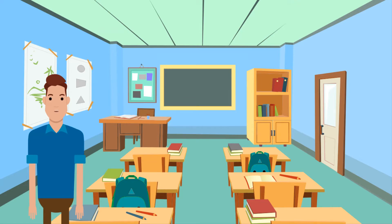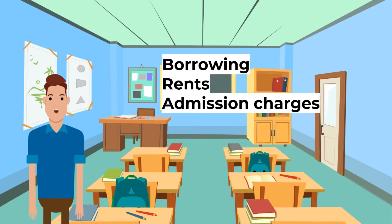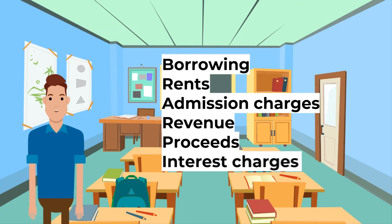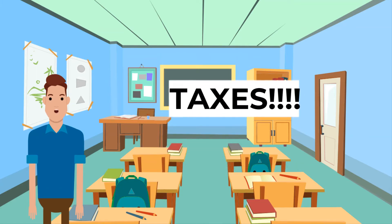Why do we need taxes? First, let's look at how governments finance public expenditure. Governments have many options, including: borrowing from the private sector, rents from publicly owned buildings and land, admission charges from public museums and monuments, revenue from the sale of public services such as postal services and public transport, proceeds from privatization of government-owned industries, interest charges on government loans, and finally taxes on incomes, wealth, and expenditures.